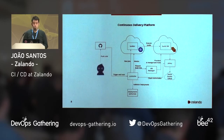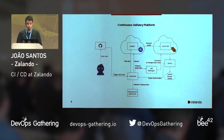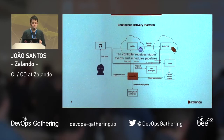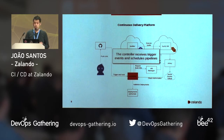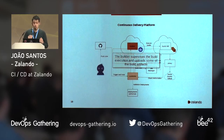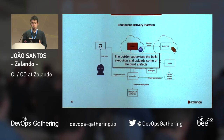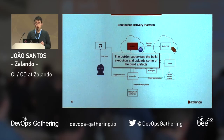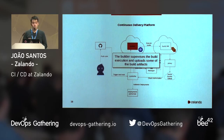CDP is composed of several microservices. The central component is the controller, which receives trigger events and schedules pipelines. Then we have the builder, which supervises the build execution and uploads some of the build artifacts. CDP runs a builder pod for every build.